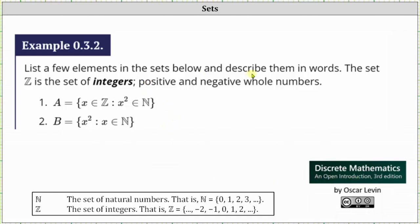We're asked to list a few elements in the sets below and describe them in words. To begin, we will define the set of natural numbers as the set containing the elements zero, one, two, three, and so on. Our textbook does include zero as a natural number, some don't, and then we have the set of integers.